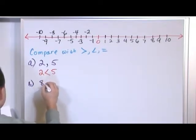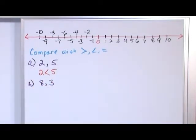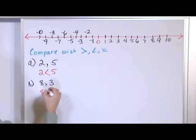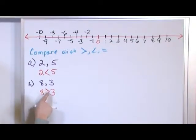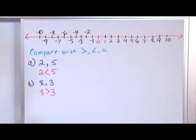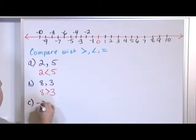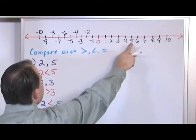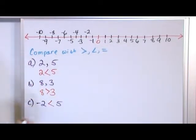For the next one, let's look at eight and three. The arrow always points to the smaller number, which is three — so eight is greater than three. For problem C, negative two compared with five: negative two is way over on the negative side, so it's certainly less than five, which is over here on the positive side. The arrow points to negative two, the smaller number.